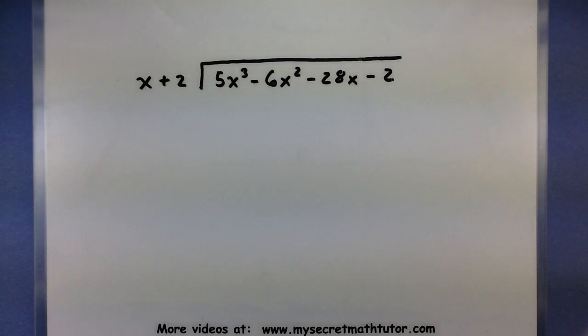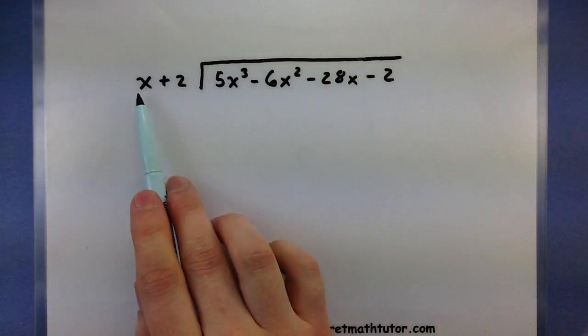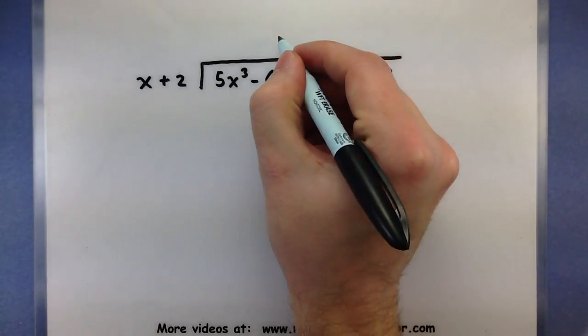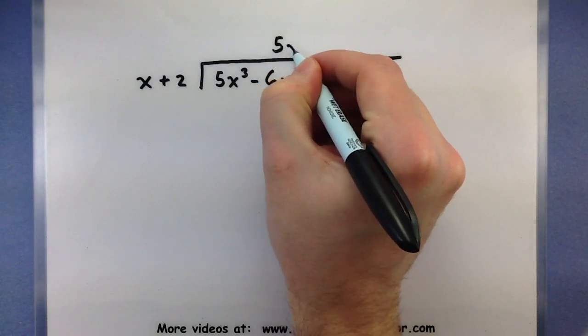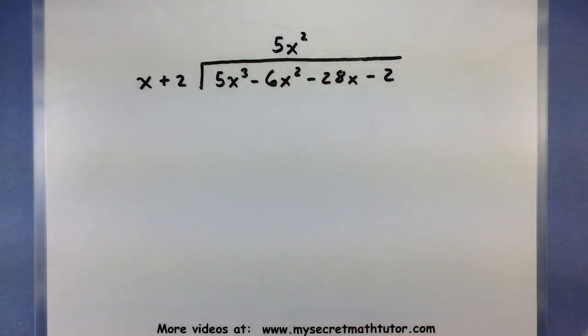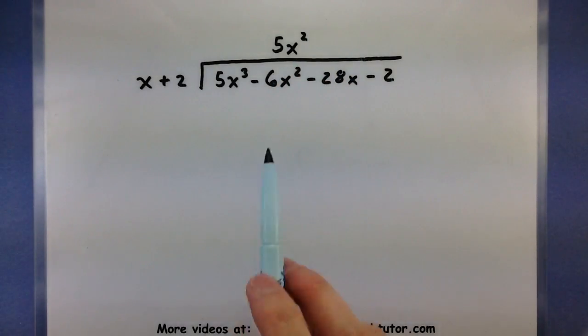Now if you think about that for a moment you'll see that you would have to multiply x by a 5x². Let's write that on top, 5x². Now that will be essentially the first term of my new polynomial.